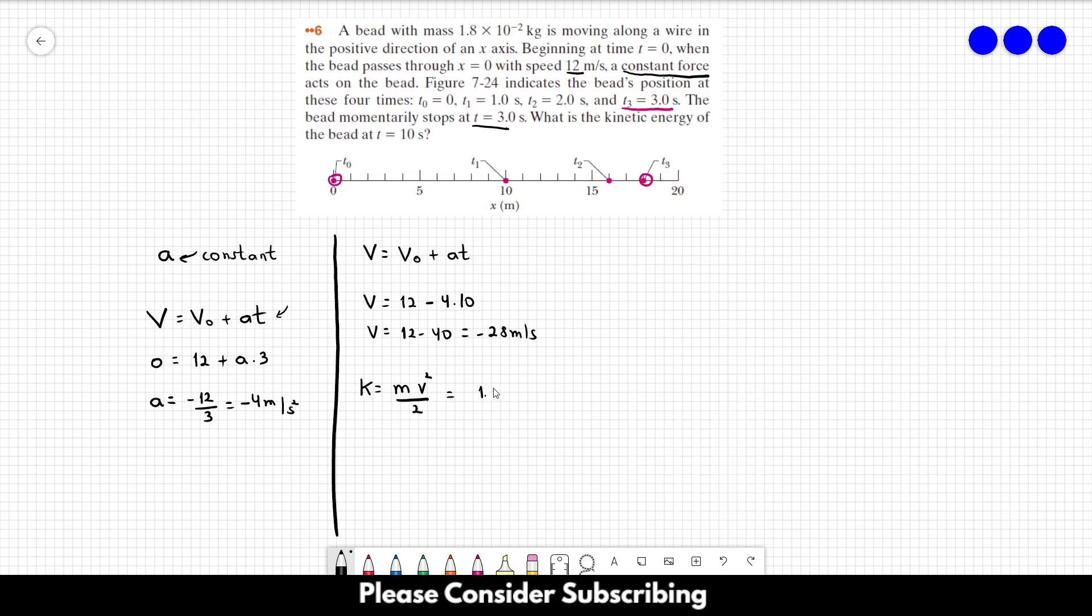The mass is 1.8 times 10 to the minus 2, the speed we just calculated is minus 28, divided by 2.